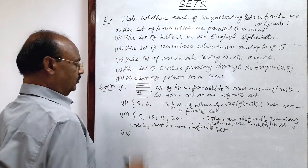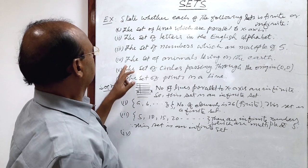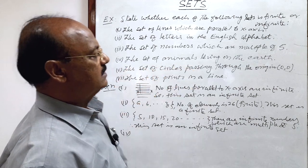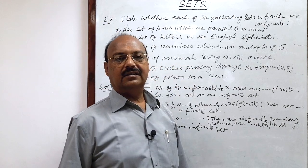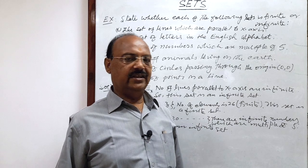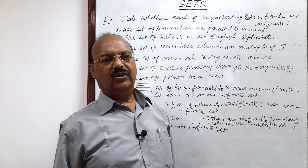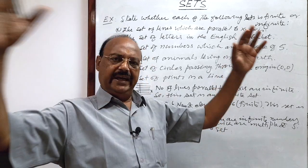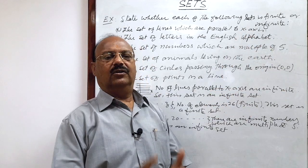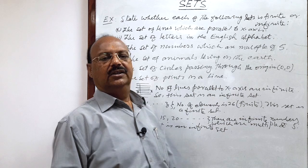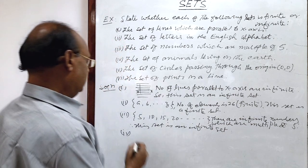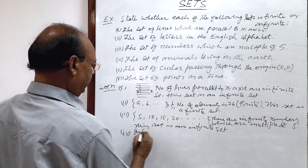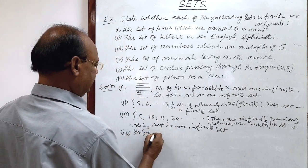Fourth question: the set of animals living on the earth. Obviously, we cannot count all the animals on this earth. So this set is an example of an infinite set.